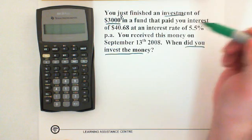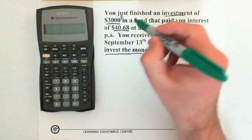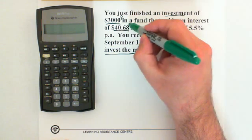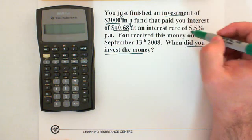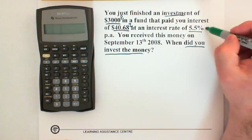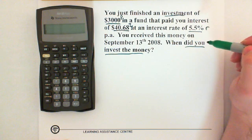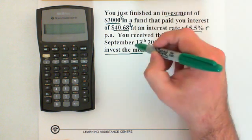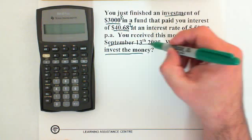In a fund that paid you an interest of $40.68, so this is our interest earned, and an interest rate of 5.5%, so then this is our rate. You received this money on September 13th, 2008.